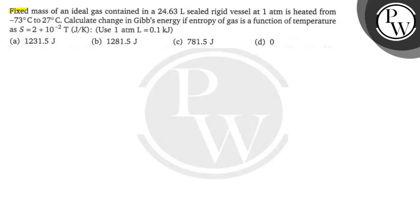Hello Bacho, let us read this question. Fixed mass of an ideal gas contained in a 24.63 liters sealed rigid vessel at 1 atmosphere is heated from minus 73 degrees Celsius to 27 degrees Celsius. Calculate the change in the Gibbs energy if entropy of gas is a function of temperature as S is equal to 2 plus 10 power minus 2 T joule per Kelvin. Use 1 atmosphere liter is equal to 0.1 kilojoules.